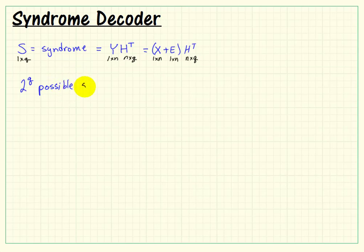Since our syndrome is 1 by k, we say that there's actually 2 to the q possible syndromes. For example, if the syndrome was 3 bits wide, we know that there's 2 to the 3, or 8, possible arrangements of 1s and 0s. Now, for n bits in our codeword, we would say that there's actually 2 to the n possible error patterns.